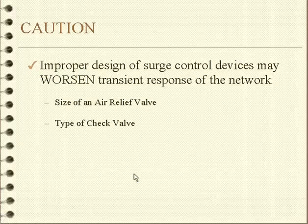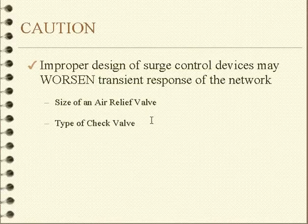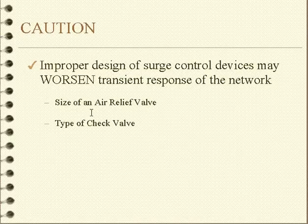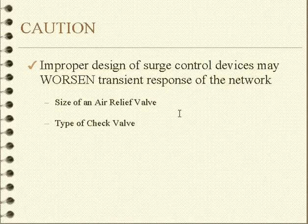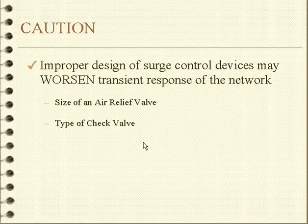There is a word of caution here: improper control can actually worsen the response. For example, an air release valve — if the orifice is too large when you release the air — you can get a large pressure spike when the air is released and the columns come crashing back together. Certain types of check valves can also worsen the transients. So this is something that we have to consider.